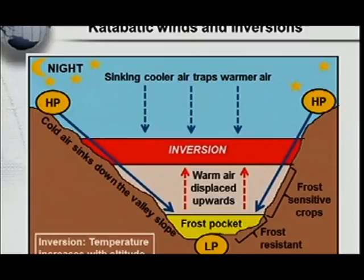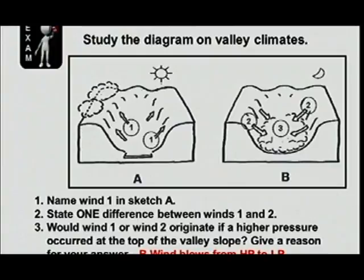You must remember that as this air moves down the slope, there was a high pressure on the slope and here in the valley was a low pressure, because winds or air always move from a high pressure towards a low pressure. Now, this forms the basis of this exam question, and this exam question is very, very important. Last year, the question said: study the diagram on valley climates and answer the questions that follow.